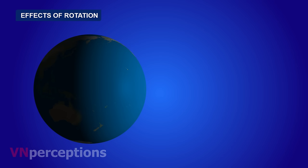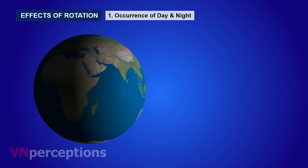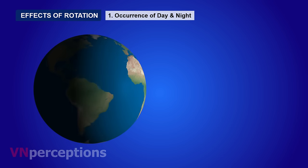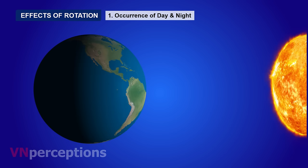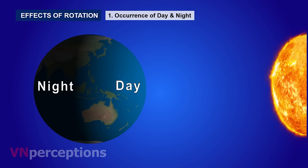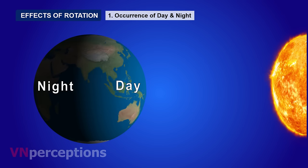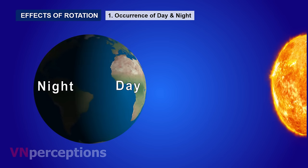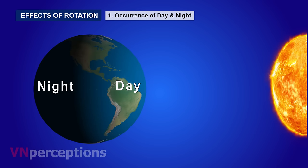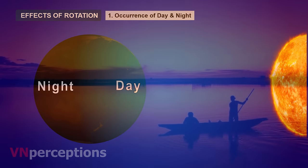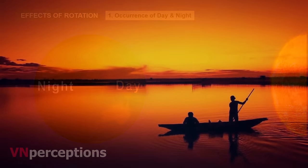Now let us learn the effects of rotation. The first and most important effect is that day and night are caused by the rotation of the earth on its axis. A part of the earth faces the sun and has day, while the other part, which does not face the sun, has night. This happens accurately and gradually — it does not happen suddenly. The time when the sun begins to cast its light in the morning is known as dawn.